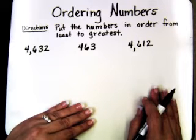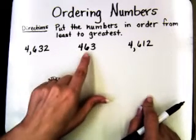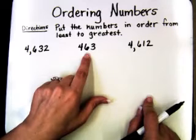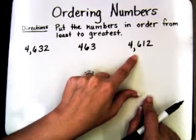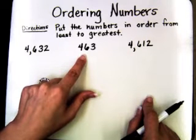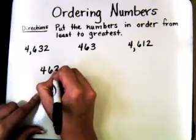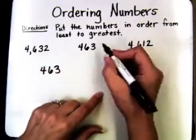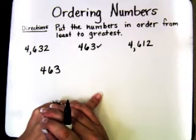Let's look at the numbers that we have. This is a four-digit number, this is a three-digit number, and this is a four-digit number. Now automatically I should be thinking: if I'm putting the numbers in order from least to greatest, the one with three digits is going to be my smallest number, so I'm going to put it first. I tell students to go ahead and put a little check beside it, because there's no need to compare the digits in that number anymore — we've already decided it is the smallest number.